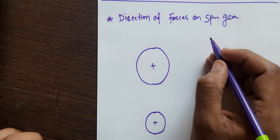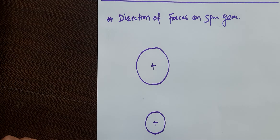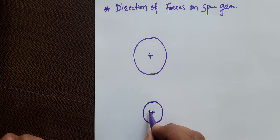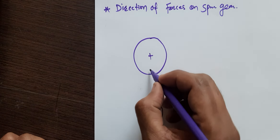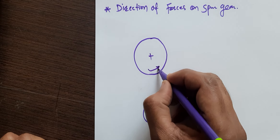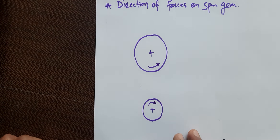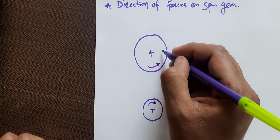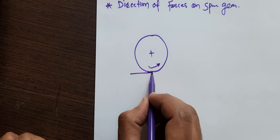For this numerical, we will see how to find the direction of the forces acting on spur and helical gears. For direction of the forces, first you have to find out the driving member and driven member. If the driving member is rotating in clockwise direction and the driven member is rotating in anticlockwise direction, then the driving member is exerting force on the driven member. So the tangential component on the driven member will be in the direction of rotation.